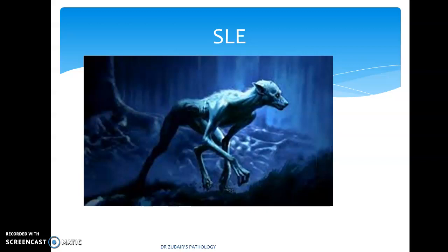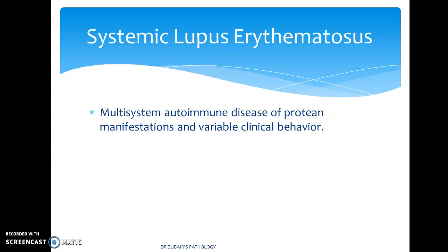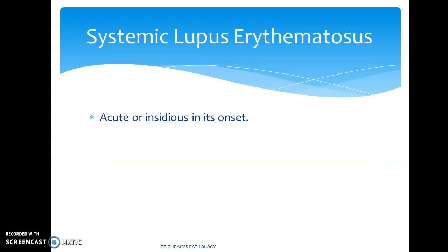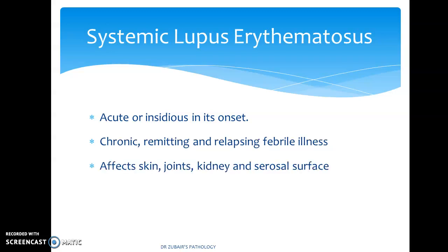Let's discuss SLE — systemic lupus erythematosus — a prototype of autoimmune diseases. Lupus refers to wolf. It is a multi-system autoimmune disease of protean manifestation and variable clinical behaviour. Immunologically, the disease is associated with plenty of autoantibodies, classically including anti-nuclear antibodies. It can be acute or insidious in onset. It is a chronic, remitting and relapsing febrile illness affecting the skin, joints, kidney and serosal surfaces, with a female predominance of 9 to 1.